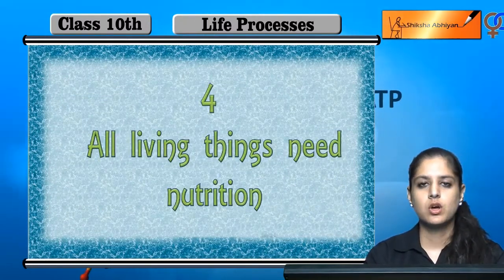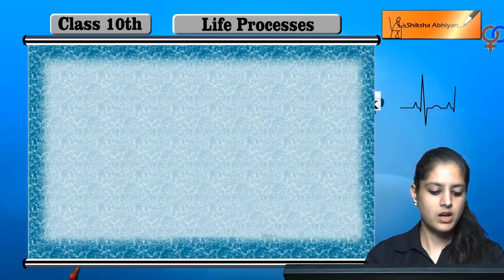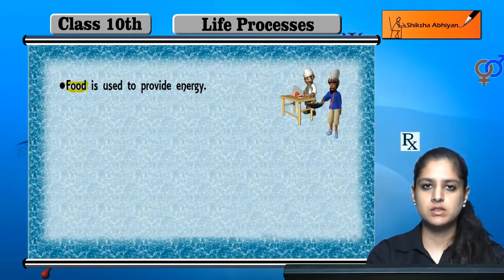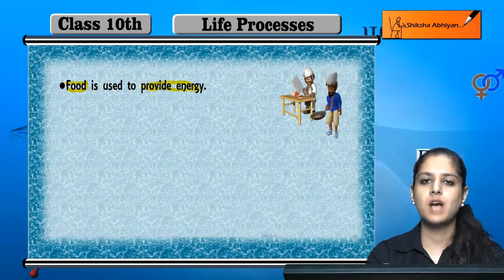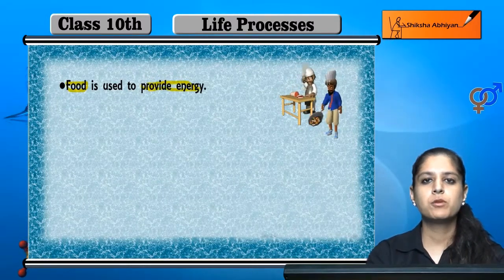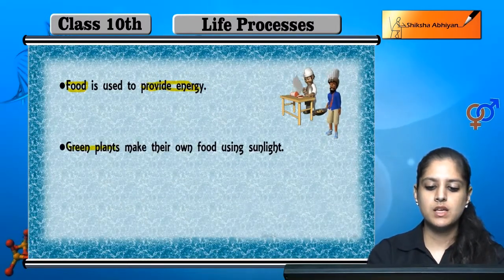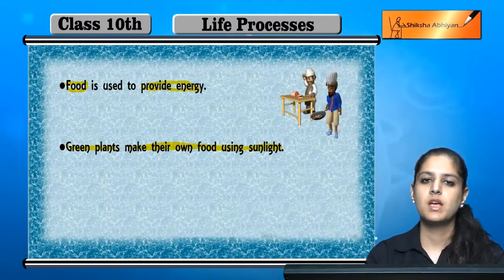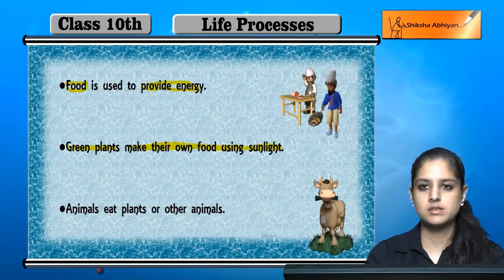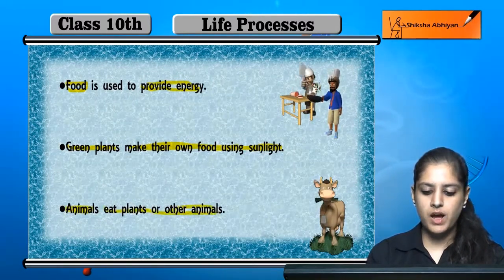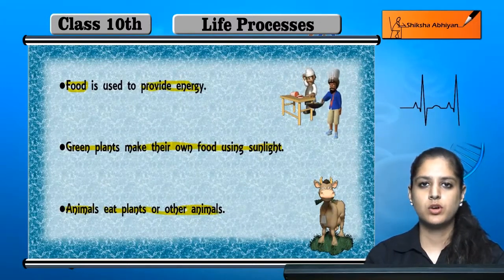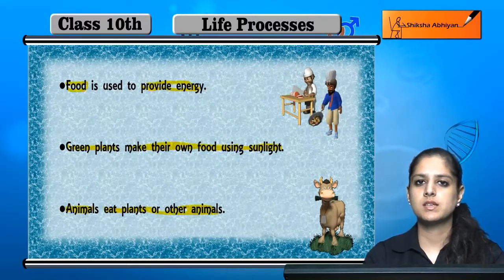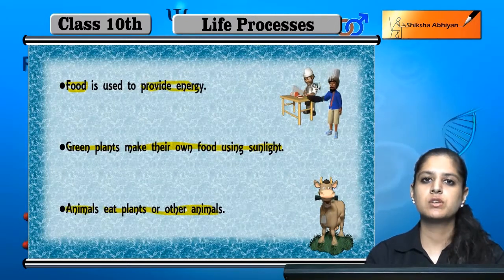Now, food — all living things need nutrition. Every living thing needs nutrients. Food is used by the living thing to provide energy. Green plants prepare their own food using sunlight. Animals eat plants and other animals. So food is needed for animals, human beings, and plants. This is the fourth life process: nutrition.